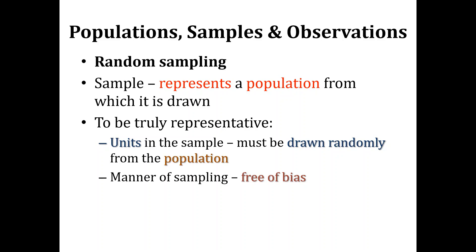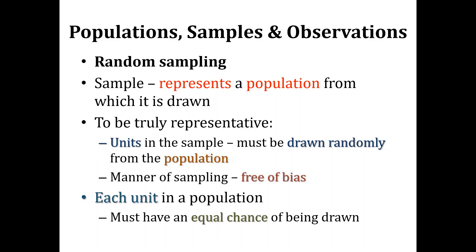Because if we are saying that this sample is going to represent the population, then it should be a true representative, which means that every unit in the population must have an equal chance of being drawn. There should be no element of bias that favors sampling of some specific type of units over others, and the units must have an equal chance of being sampled.